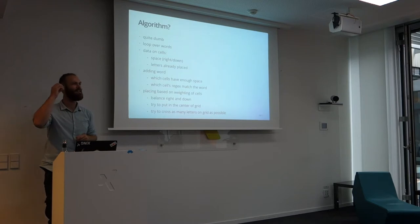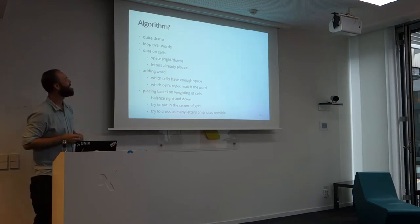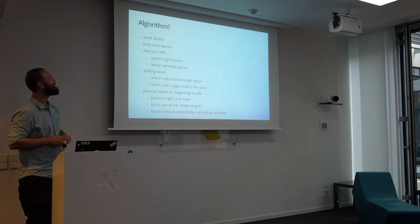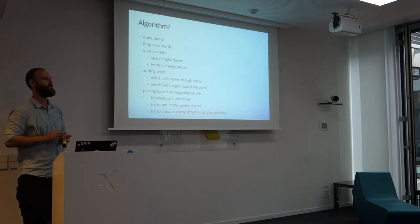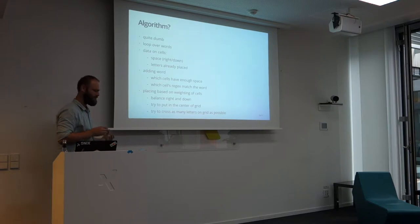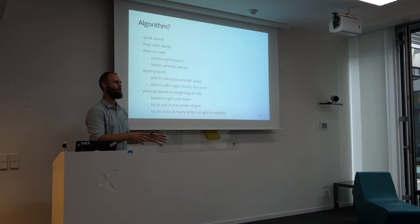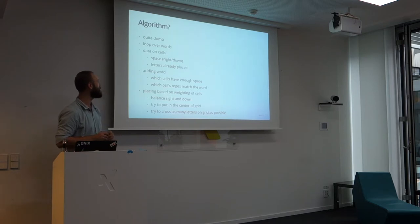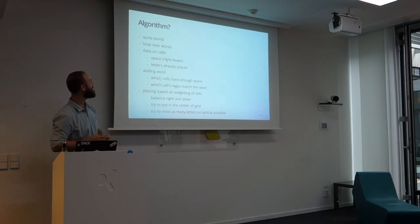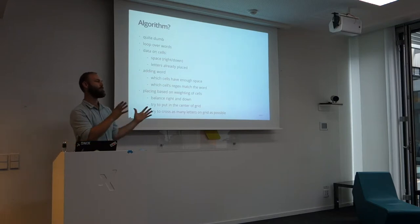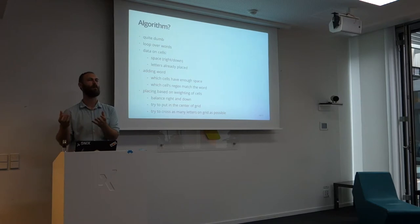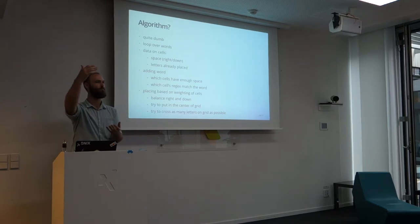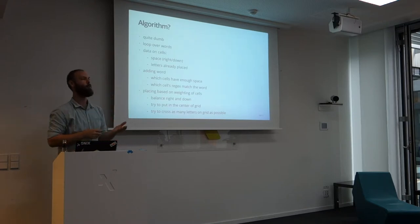Now, what's the algorithm behind it? Well, it's quite dumb and it's quite slow. The current state is: it's working. It's the first thing I could come up with which actually produced results I wanted to have. And unless I make a very, very big crossword, I think it will stay in this state. So actually what I do is: I have this grid, I have those words, and I start putting words on the grid. I start from the top, then I place them there and I look where I can place them.